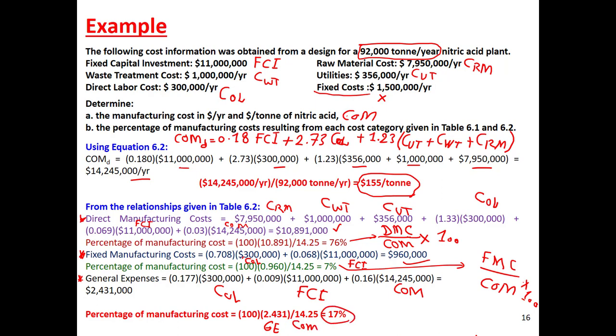This shows the role of each of these costs — direct, fixed, and general — in your total cost of manufacturing.